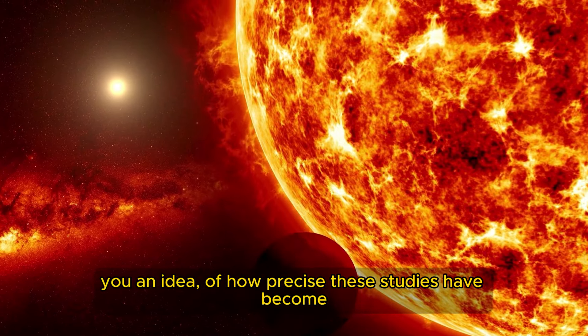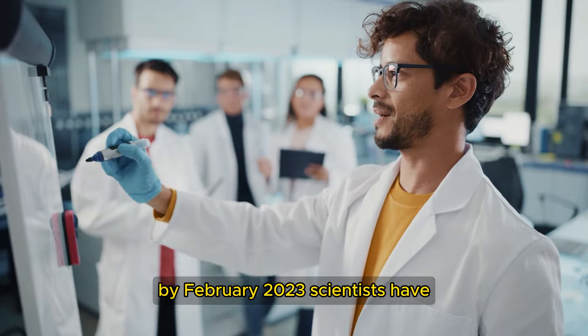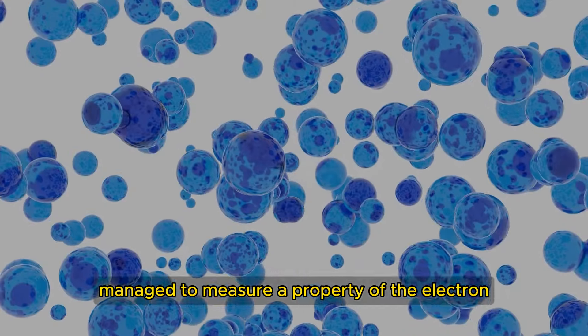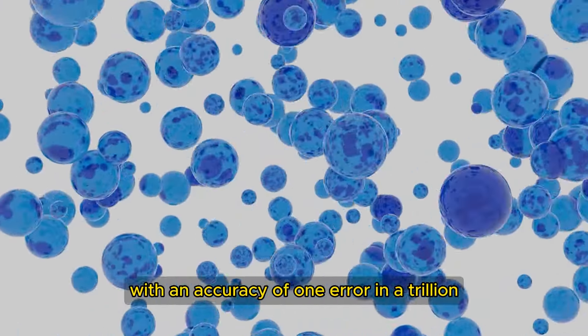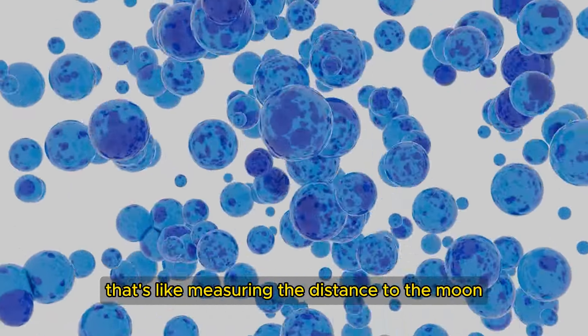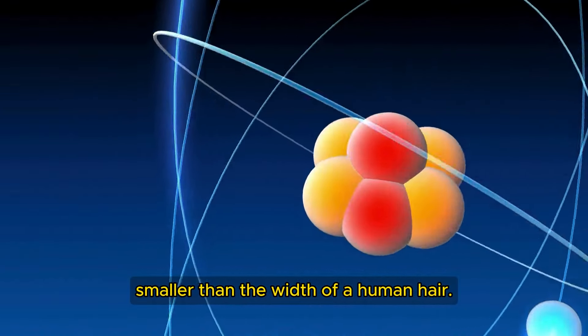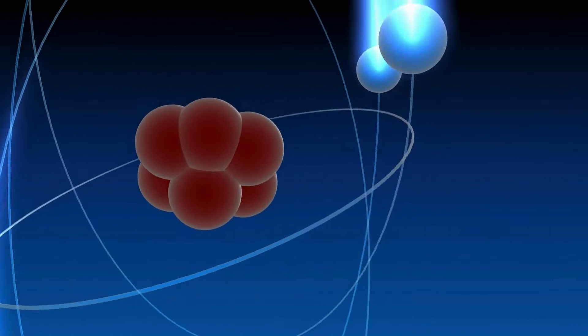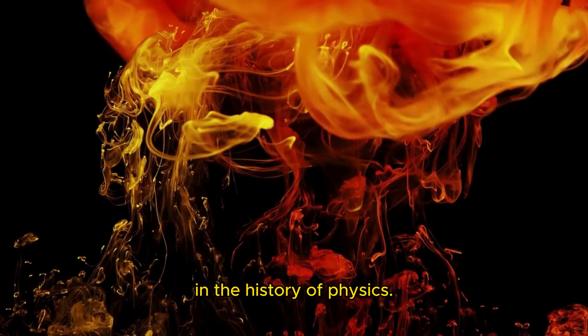And to give you an idea of how precise these studies have become, by February 2023, scientists have managed to measure a property of the electron, the g-factor, with an accuracy of one error in a trillion. That's like measuring the distance to the moon with a margin of error smaller than the width of a human hair. This shows just how precise QED is, and why it is considered one of the most accurate theories in the history of physics.